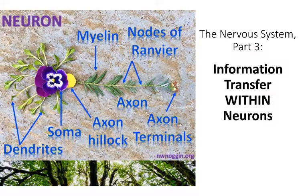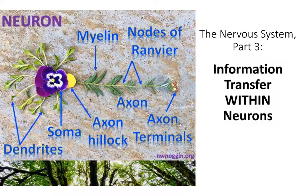Hi folks. Welcome to part three of our nervous system lecture. In this lecture we're going to talk about information transfer within neurons, which involves the movement of positively and negatively charged ions.